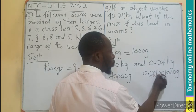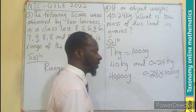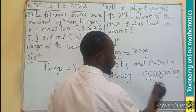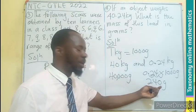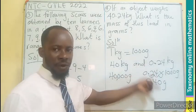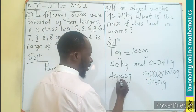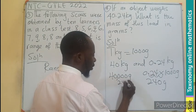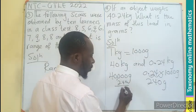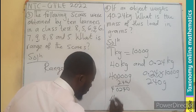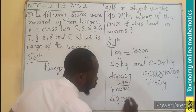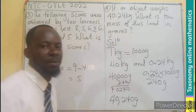You can see 40,000 grams plus 240 grams. I think I can put 240 here: 40,240, meaning 40,000, 240 grams. That's the weight of the load in grams.